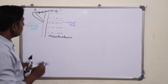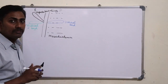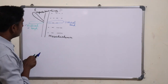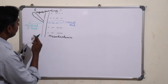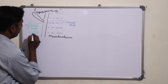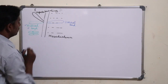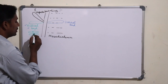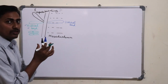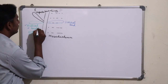This ventral bud is actually composed of two components: a right portion and a left portion. During development, this right and left portion will fuse together to form one bud — the ventral bud.